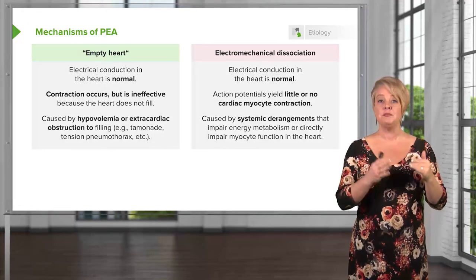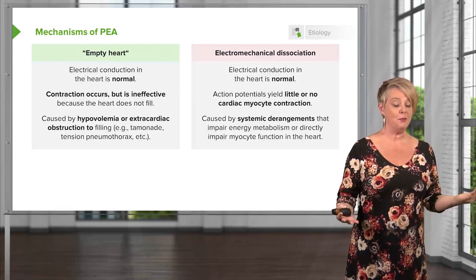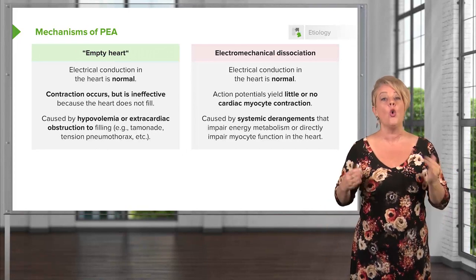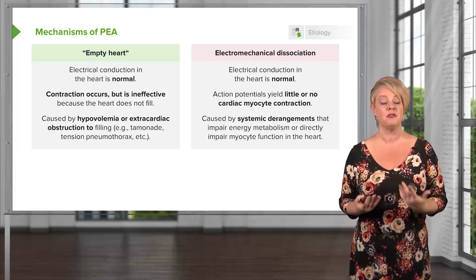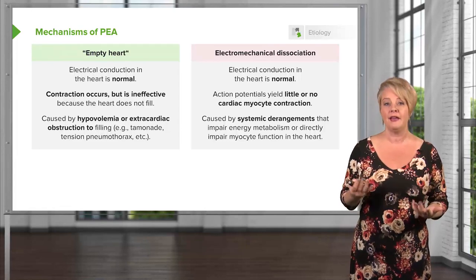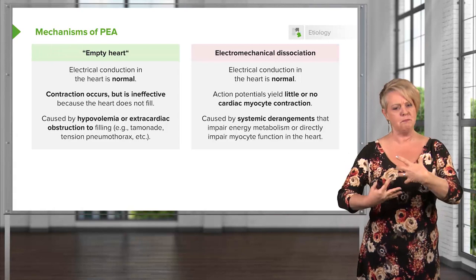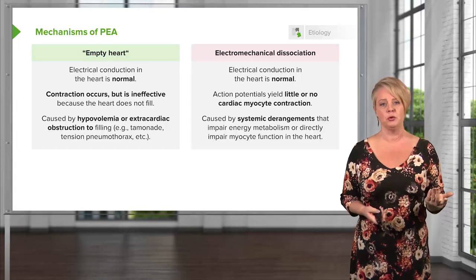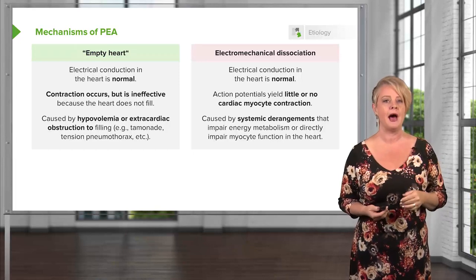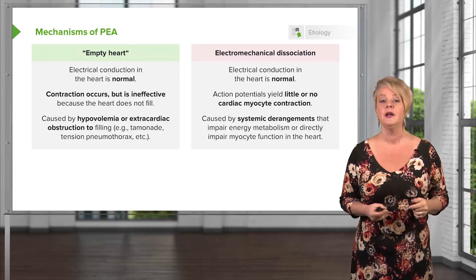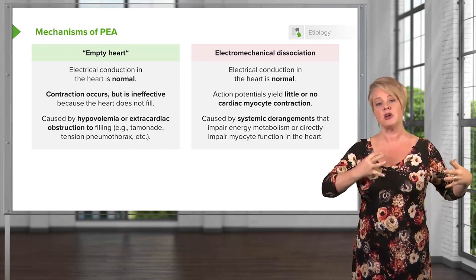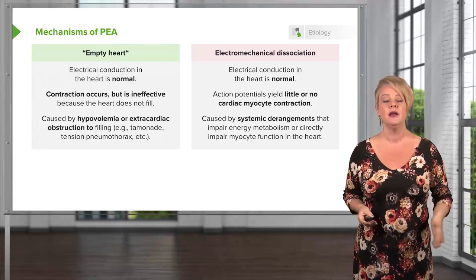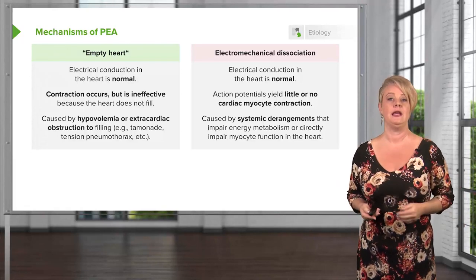Empty heart PEA is caused either by hypovolemia — as in the example of all blood volume being on the floor — or by some obstructive process that prevents the heart from filling. Examples include cardiac tamponade, where a large collection of blood around the heart physically compresses it so it can't fill or send blood out normally, and tension pneumothorax, where a huge high-pressure air collection in the chest mechanically squishes the heart and prevents normal filling. These are all empty heart forms of PEA.